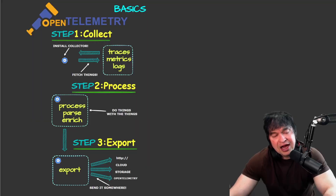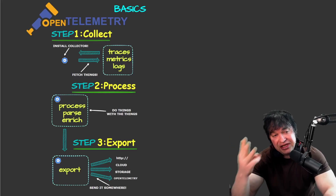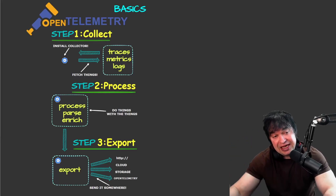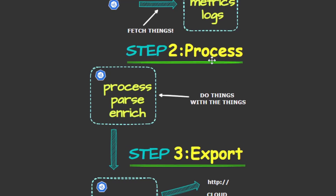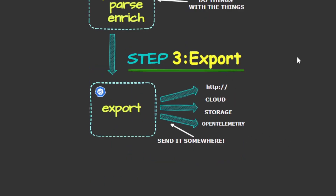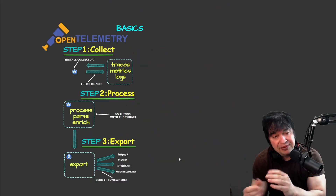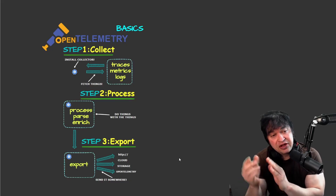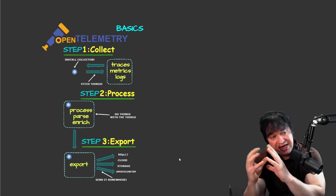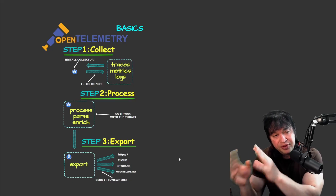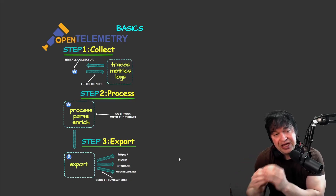I like to view OpenTelemetry as three main steps. The first step is to collect, then process, and finally export. Whether you're running OpenTelemetry on VMs, containers, or Kubernetes, these are the three main steps: how do we collect, how do we process, and how do we export?